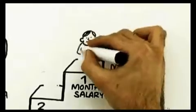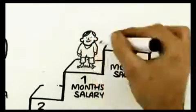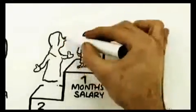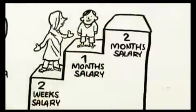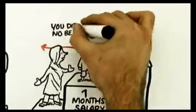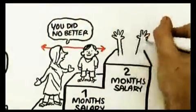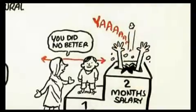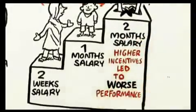So you're going to get a different result here. Well, what happened was that the people offered the medium reward did no better than the people offered the small reward. But this time around, the people offered the top reward, they did worst of all. Higher incentives led to worse performance.